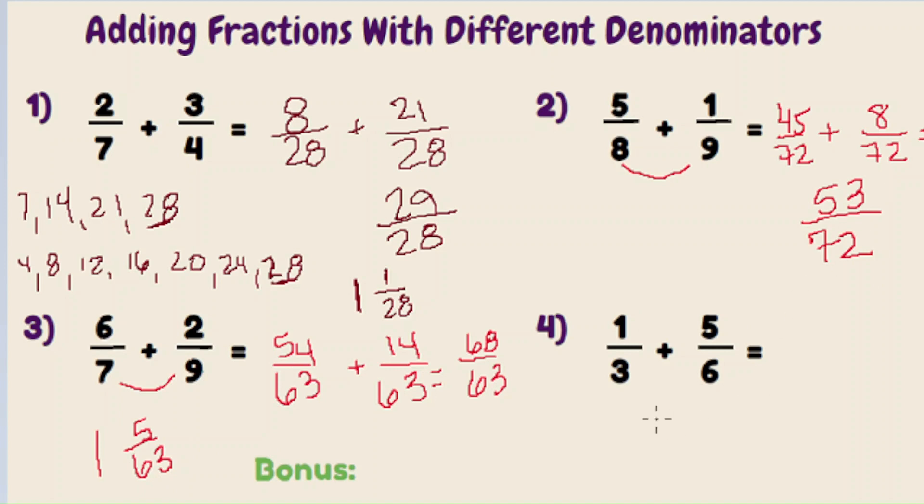All right, last one. What is one-third plus five-sixths? I'm going to show you a quick trick on this one that you can use. It follows the same principle as what we've already covered in the above examples, except it's just going to take a few steps out. So three times six is going to be eighteen. And this is what we call the butterfly method. And it's really cool. So now that you've done that, you're going to cross multiply.